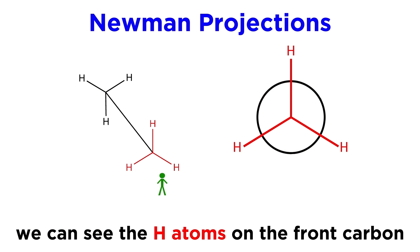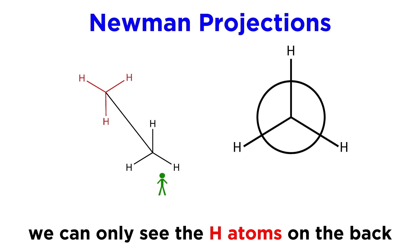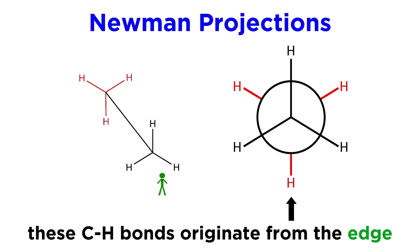We will see these three hydrogens on the front carbon, as well as the bonds to them, which will originate from the center of this circle, so those will go in these directions. Then, although we can't see the back carbon, we can see the hydrogens that project from it, so these bonds will start at the edge of the circle, indicating that the bonds continue behind that front carbon. Those will go in these directions.